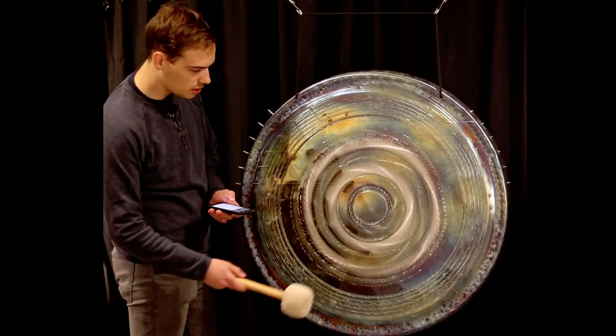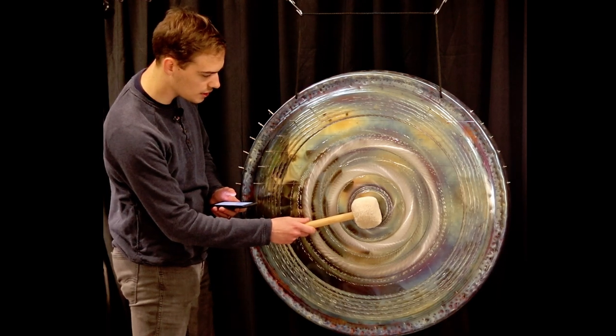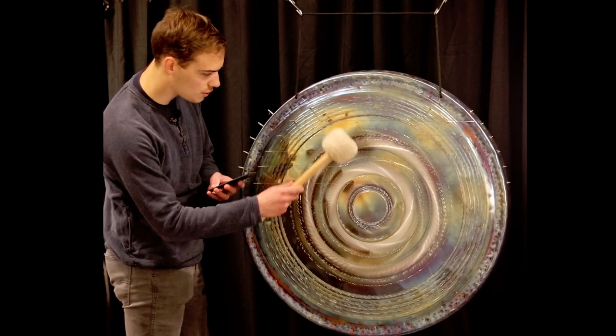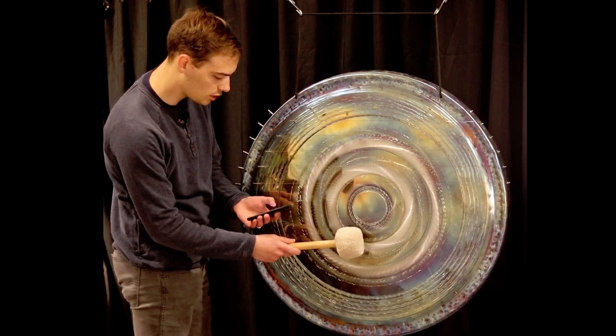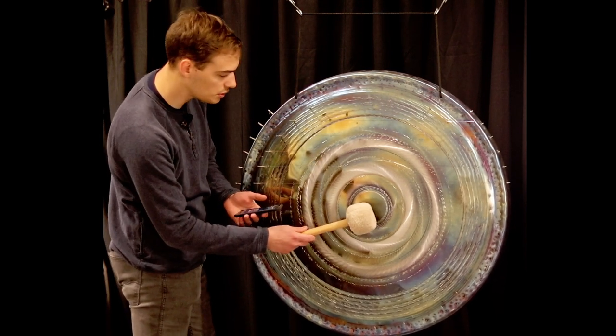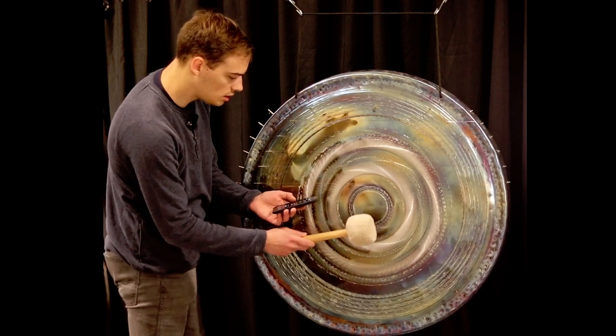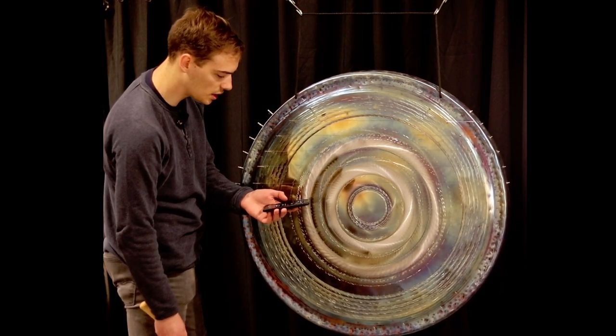You're going to want to start by striking it right in the center. Not too hard so that it rattles everything, but hard enough that you can, on your phone tuner, or if you have a regular tuner, an analog tuner, that's great too. You can get the center pitch of this gong.